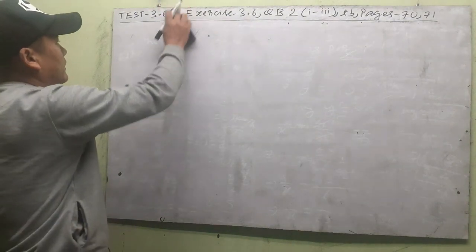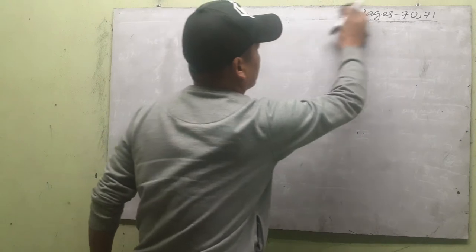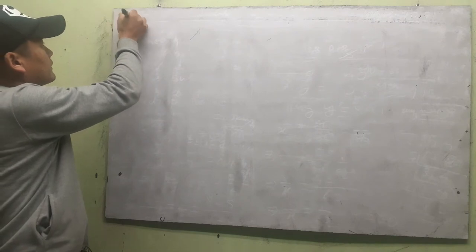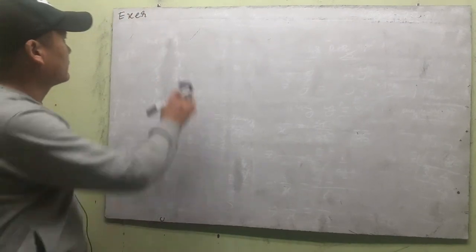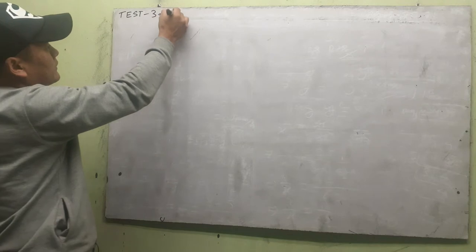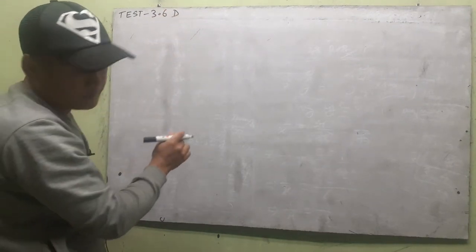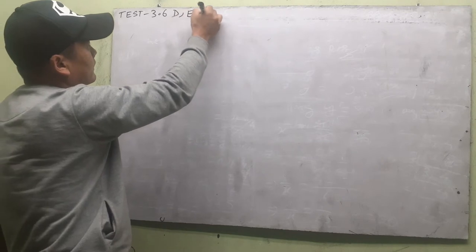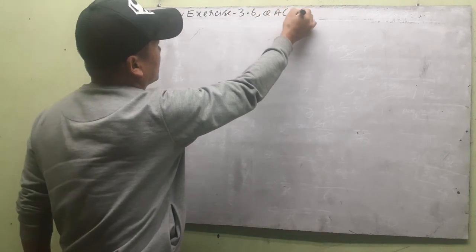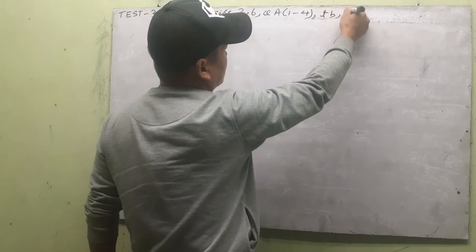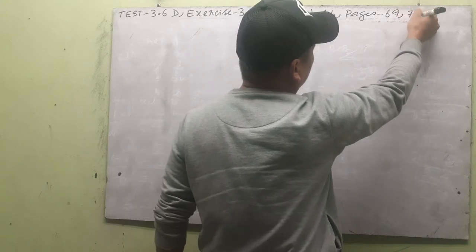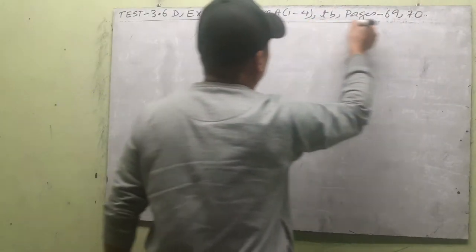The next test — the last test for this exercise. Let's start the portion for the test. This is under exercise 3.6, test number 3.6d. It will cover exercise 3.6 questions a1 to a4, found in the textbook. Let's start with the test.